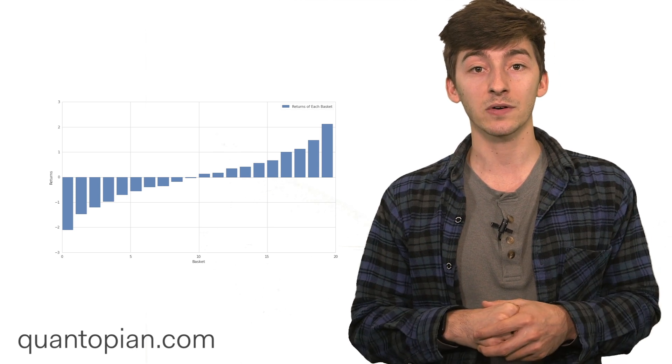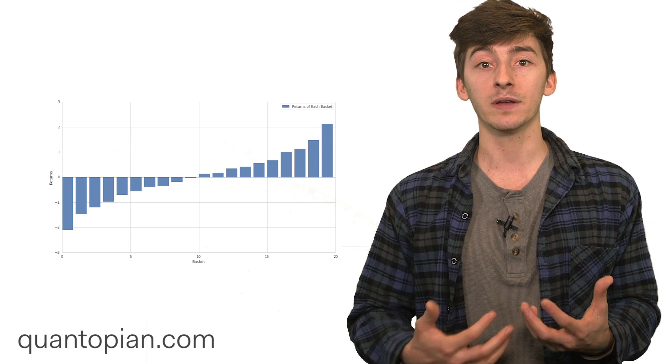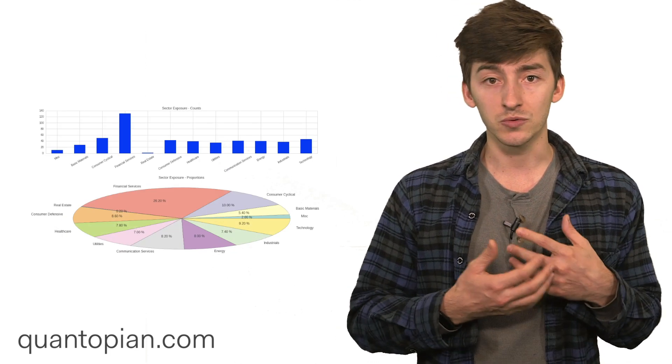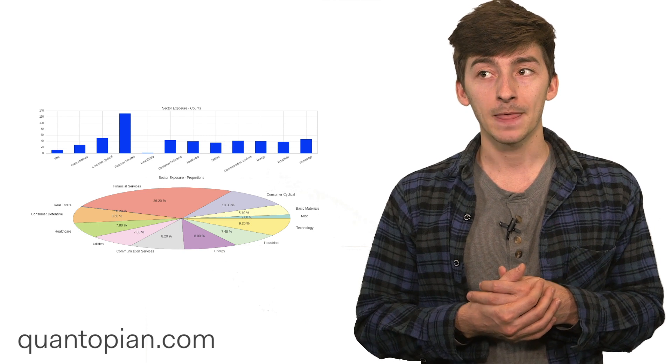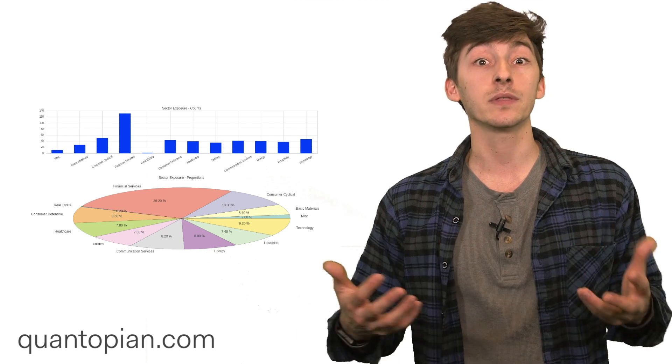So it's critical to make sure that your algorithm can actually trade what it wants to trade. This is the point of having a tradable universe in the first place. When you have an algorithm and you set it off into the market, and you don't specify what you want it to trade, it's going to try to trade everything.